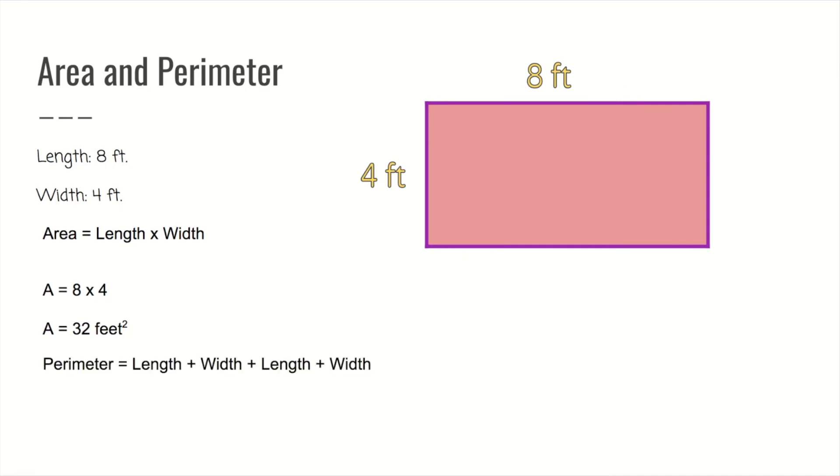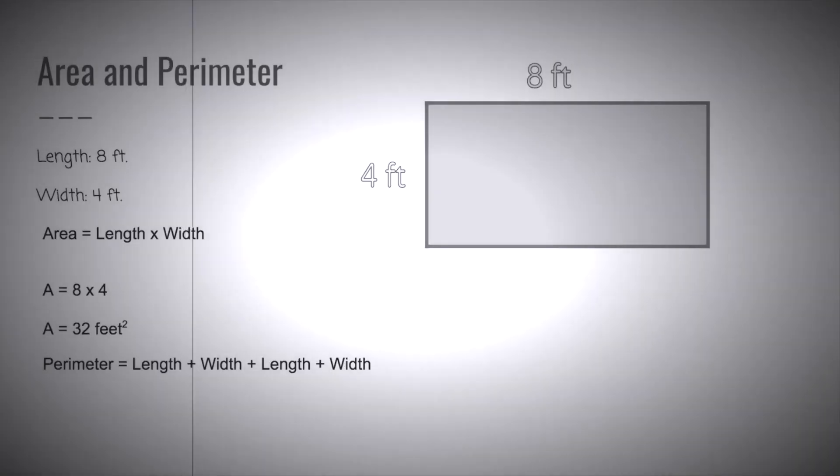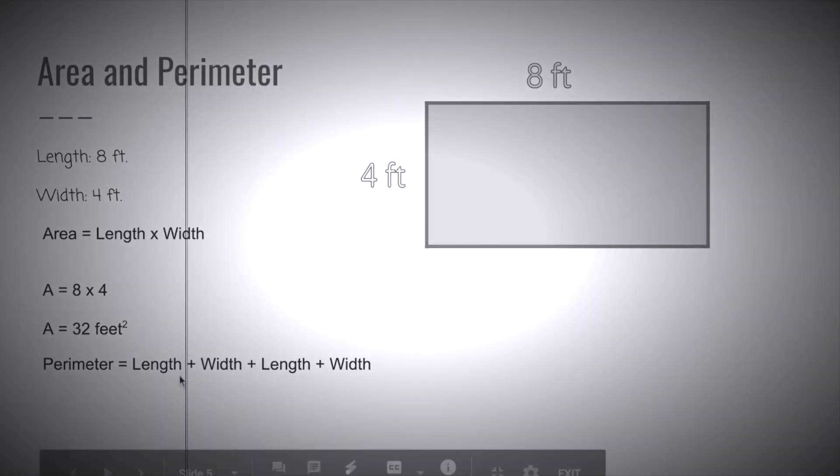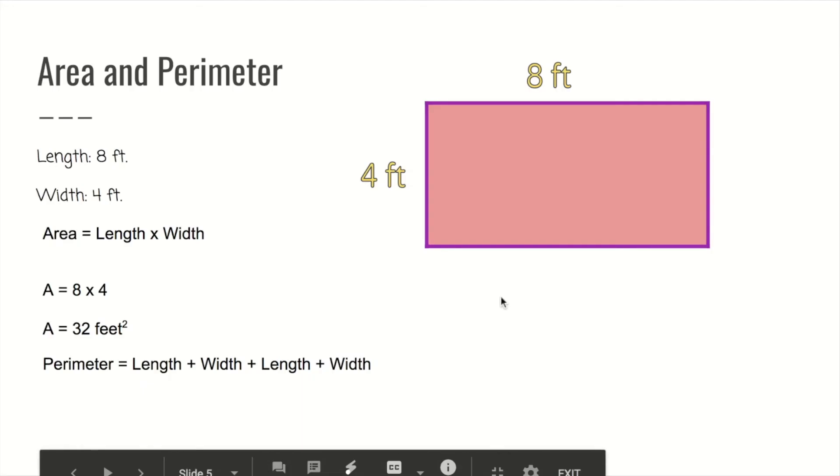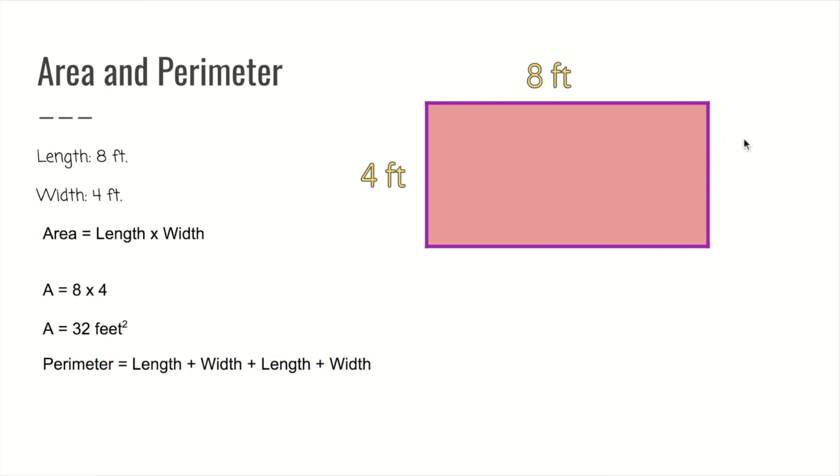The perimeter is the length plus width plus length plus width. But Mr. Smaller, I only see one eight and one four. We're supposed to be adding four numbers. Even though it's not labeled here, we still know how much it is. I'm willing to bet you know what number would go here. What number would go here? I'll give you a hint. This line right here is the same length as this line. So what number would go right here?